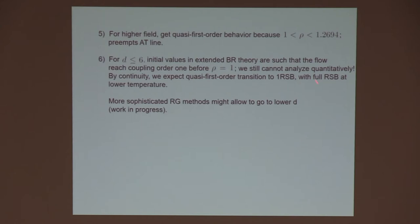So if we started at somewhat higher field, we would be slightly further out in this diagram, and eventually it passes rho equals 1 and at some point it becomes a first order transition. So we have no diverging correlation length. Some more detailed analysis shows that if D is less than or equal to 6, the initial values are such that the flow runs off to large coupling before the ratio of couplings reaches 1. So unfortunately with the methods we're using at the moment we still can't analyze that quantitatively with these methods. By continuity I would expect, we're certainly strongly motivated to expect that once D is less than or equal to 6, we will again have this quasi-first order transition to one RSB. In addition I would still expect to find full RSB at lower temperature for various reasons.